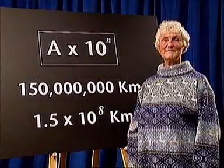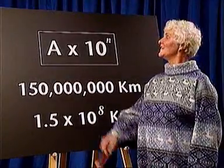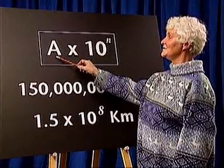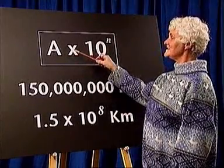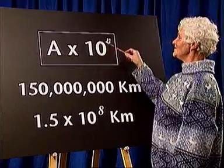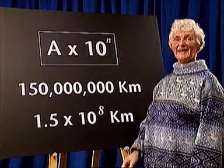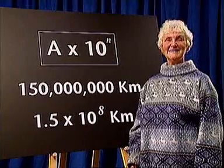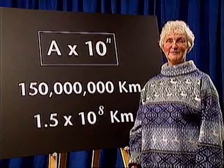A number in standard form is made up of two parts. The first part, A, is a number between 1 and 10, and this is multiplied by 10 to the power n. n is positive for very large numbers and negative for very small numbers.